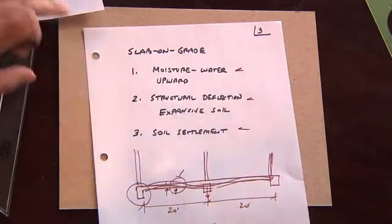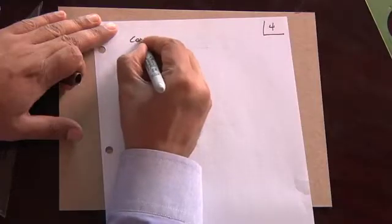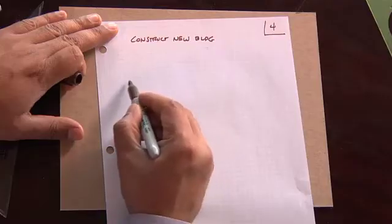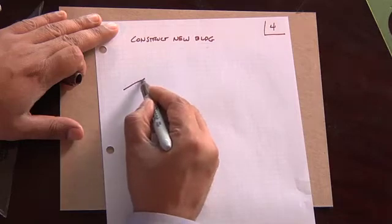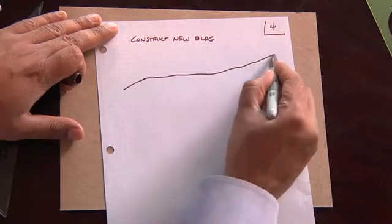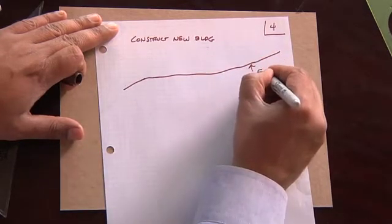Let's talk a little bit about the grading operation on how these buildings are built because that is a source of many problems. So, you're going to construct a new building. And the first thing you have to do is you have to create, I'm going to draw some line here, which is, we'll call this the existing grade.